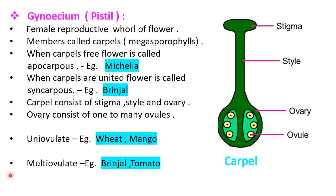In the diagram, we see the structure of a carpel. Carpel is differentiated into three main parts: stigma, style, and ovary. Inside the ovary, one to many ovules are present. After fertilization, the ovary develops into fruit while the ovule develops into seed.